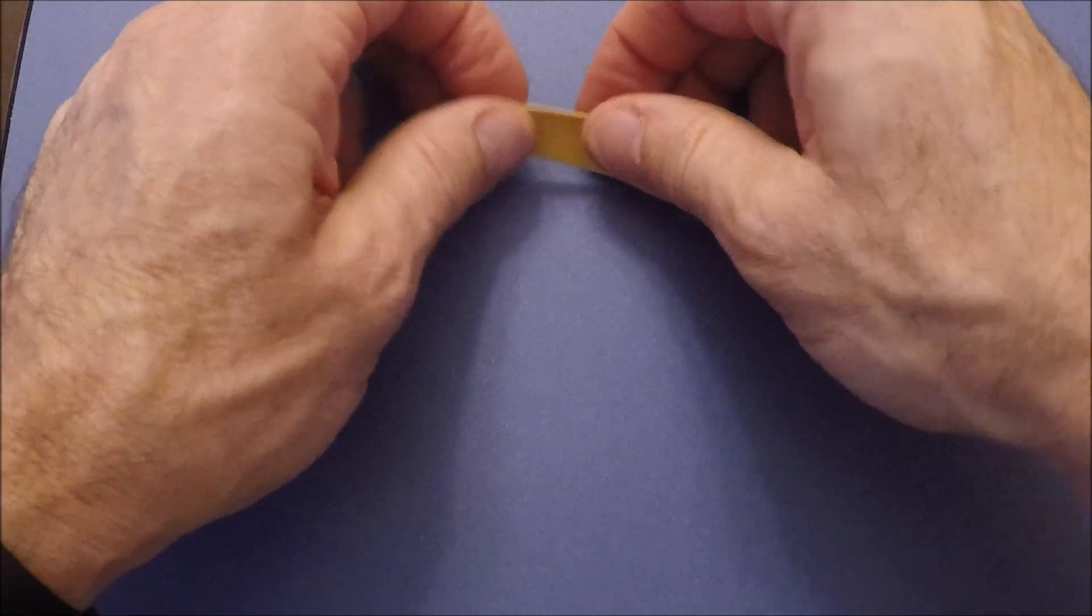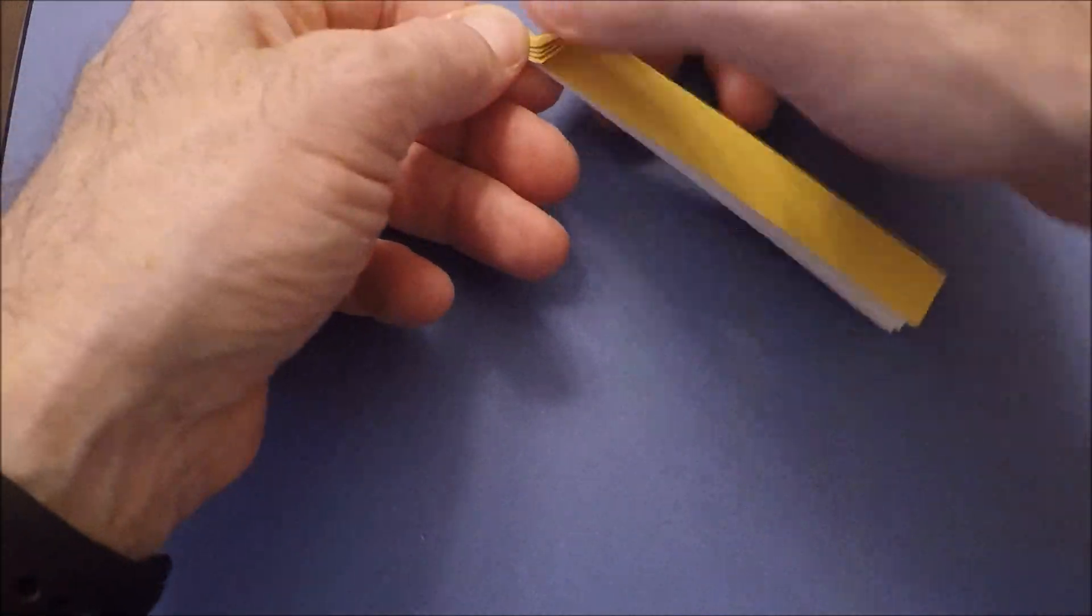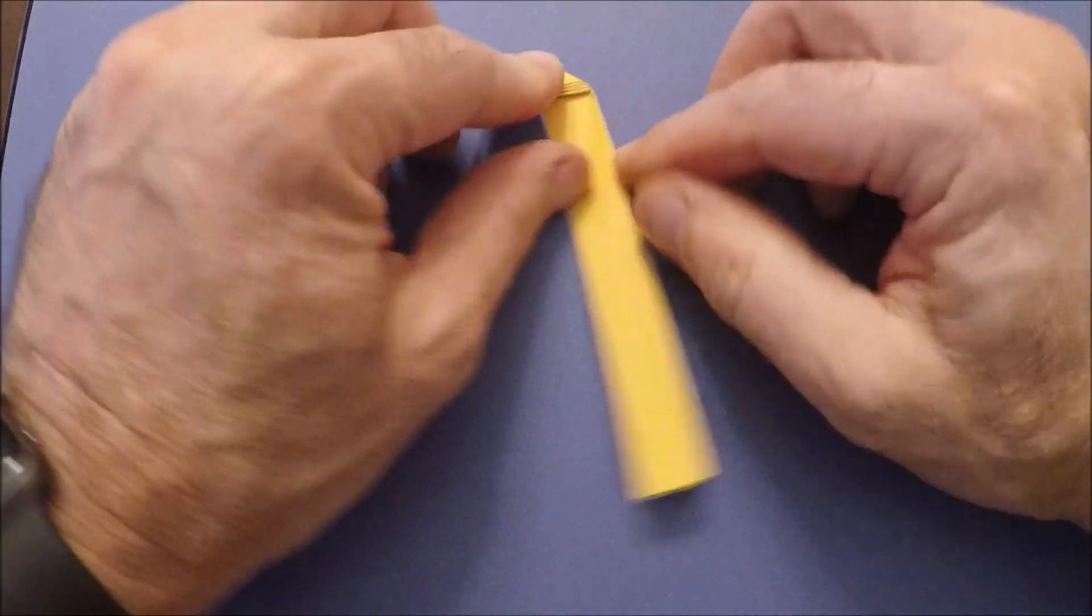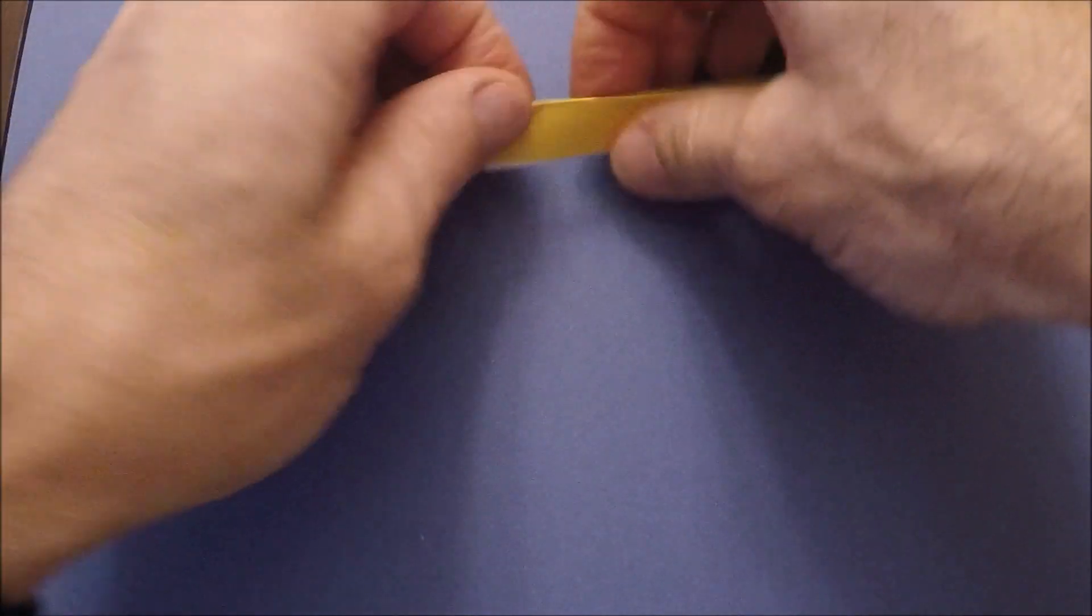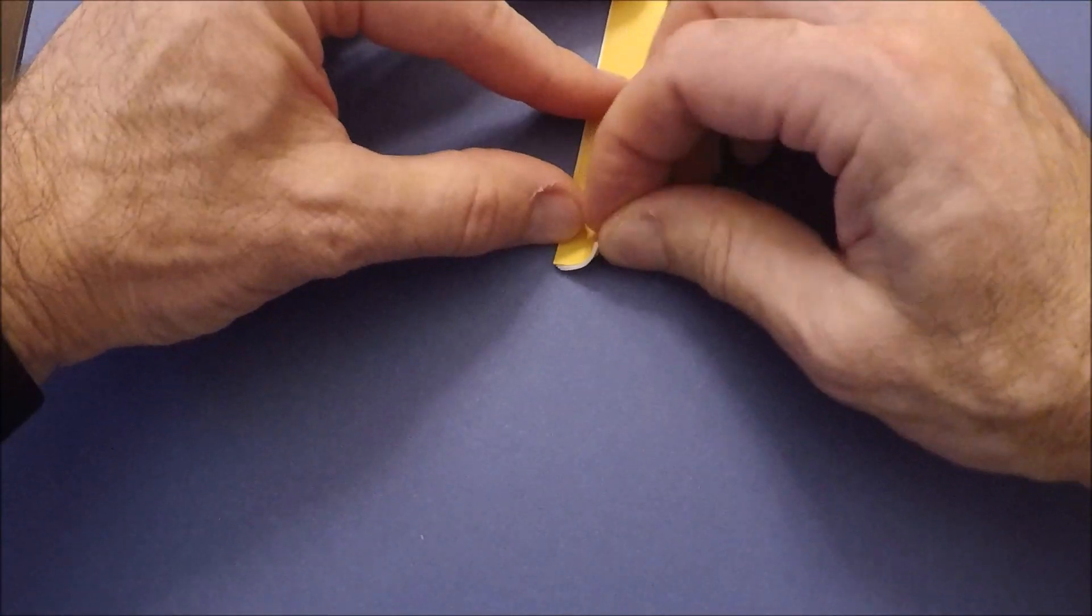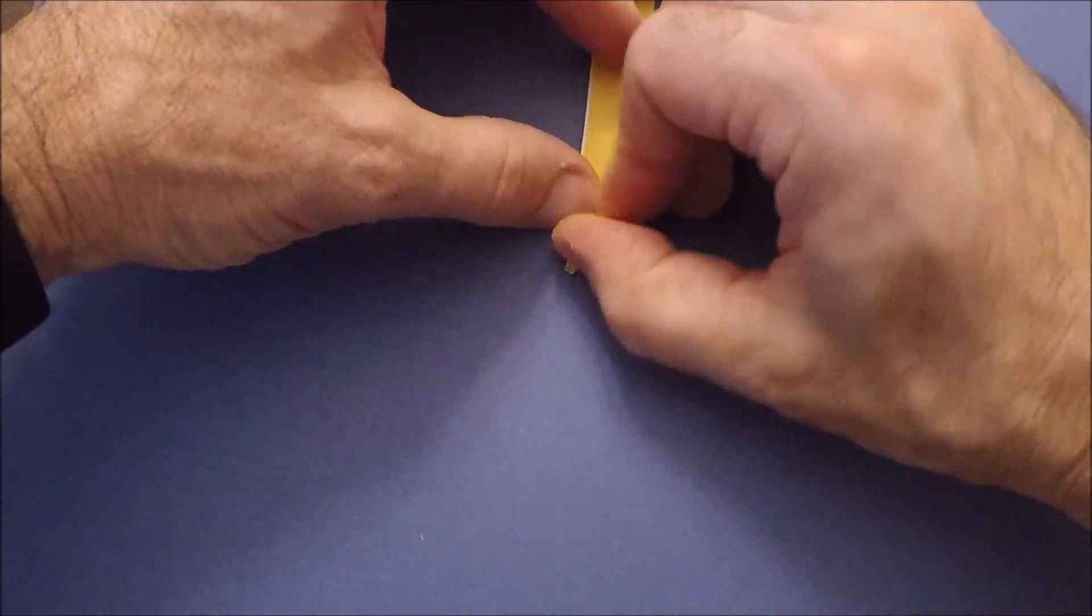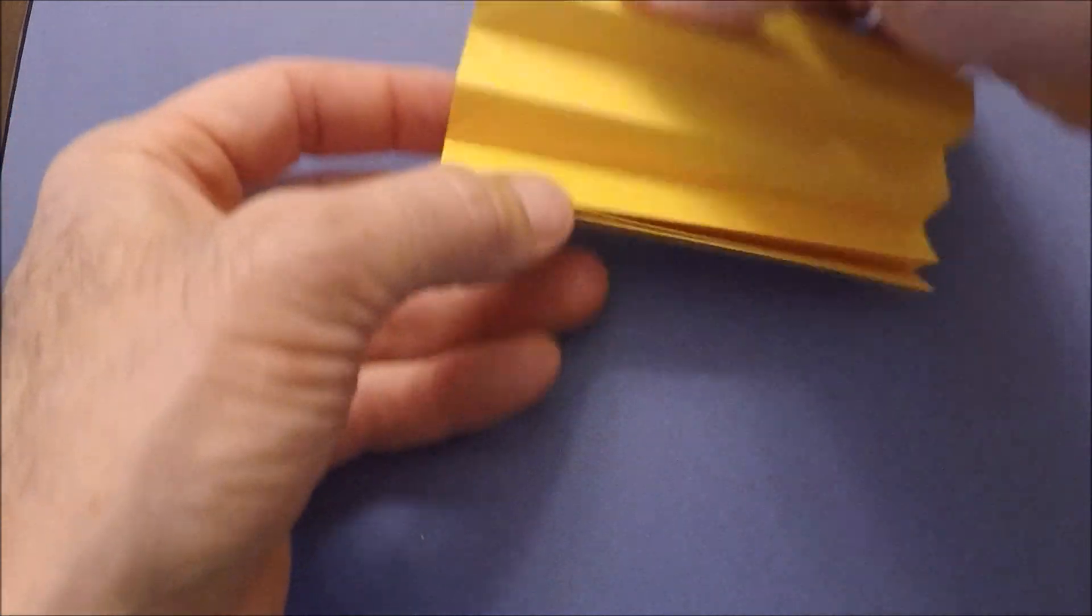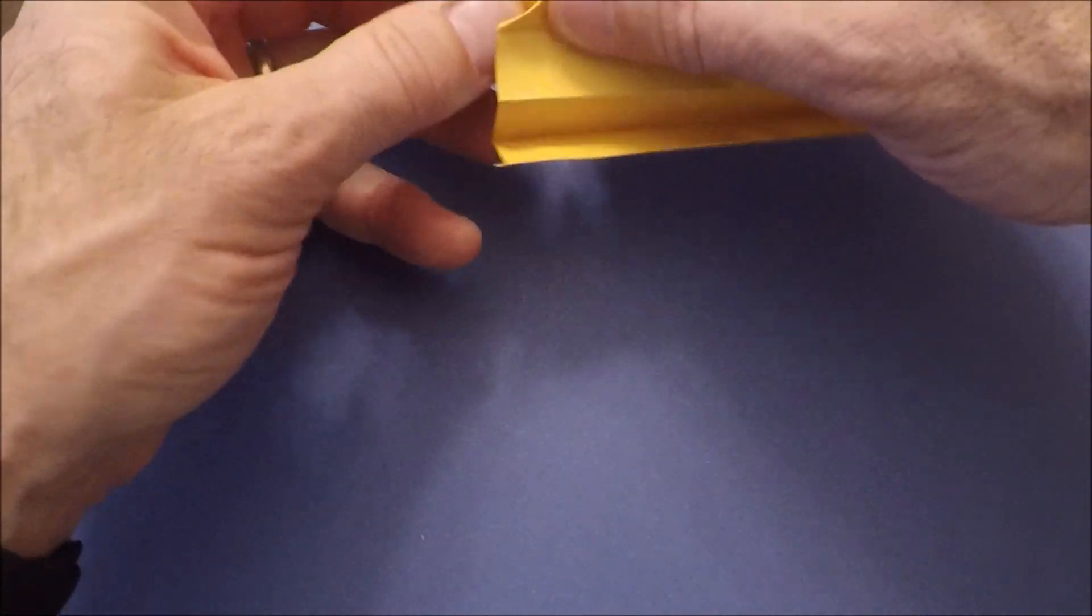Just make sure those are nice and crisp. The first thing we're going to do here is fold down this corner. Let's expand it out.